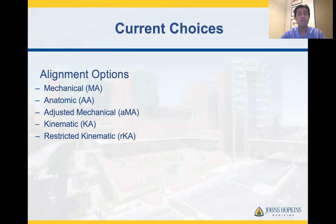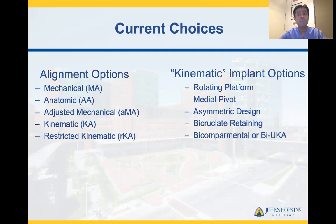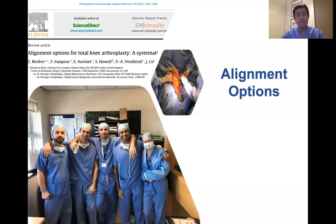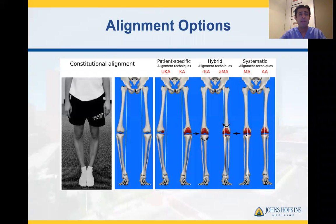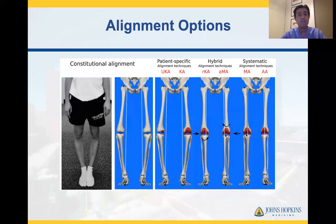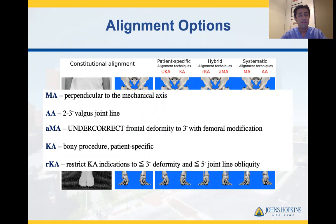Our current choices are between various different alignment options and various different smart implant options. The alignment option specifically of interest is kinematic alignment. Charles Rivier is a French-trained surgeon who now practices in the United Kingdom, and he has written a wonderful review about various different alignment options available for the total knee patient. Consider a patient with constitutional varus. On the extreme right is a systematic method of aligning these patients back to their neutral mechanical axis. On the left are more patient-specific guides such as unicompartmental knees and kinematically aligned total knees. Mechanical and anatomic alignment aligns them back to their neutral mechanical axis, whereas kinematic alignment is a bony, ligament-sparing, and soft-tissue-sparing procedure which allows you to customize various different alignment options.